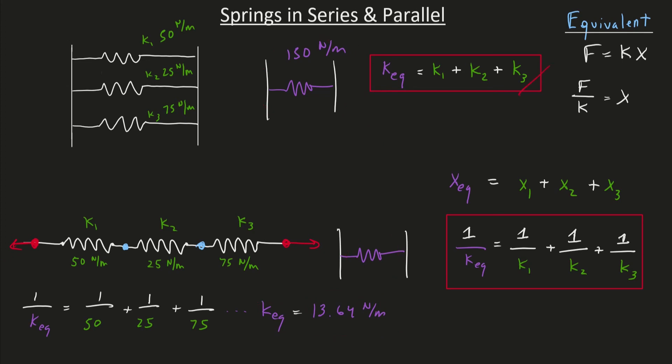So this is how you find an equivalent spring if you see a bunch of springs in parallel. And this is how you find an equivalent spring if you see a bunch of springs in series. And these equations work no matter how many springs you have. You can just imagine that you keep adding terms here, and over here, you just keep adding 1 over k4, 1 over k5, etc.